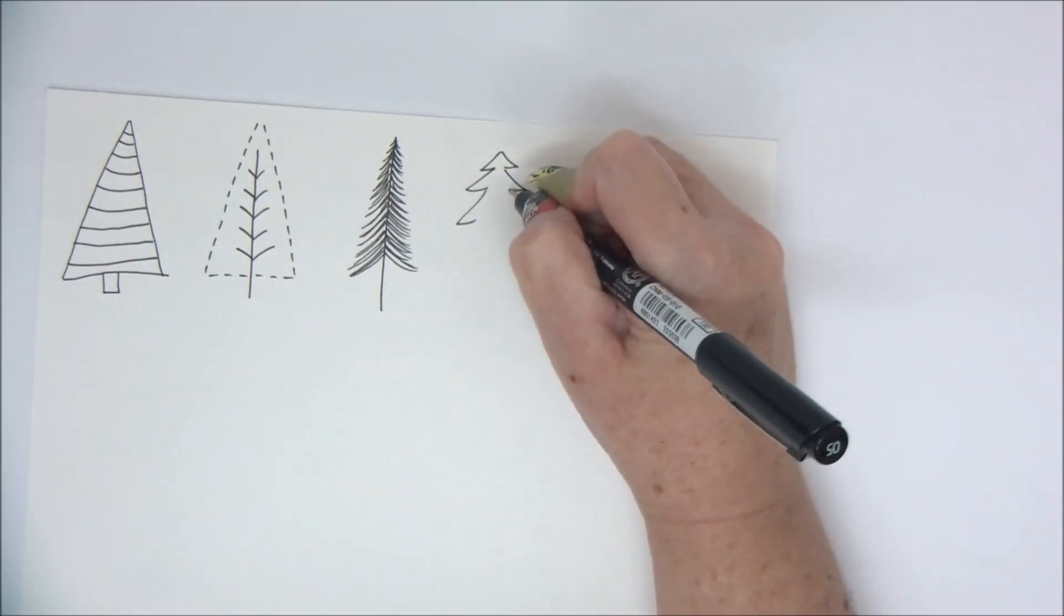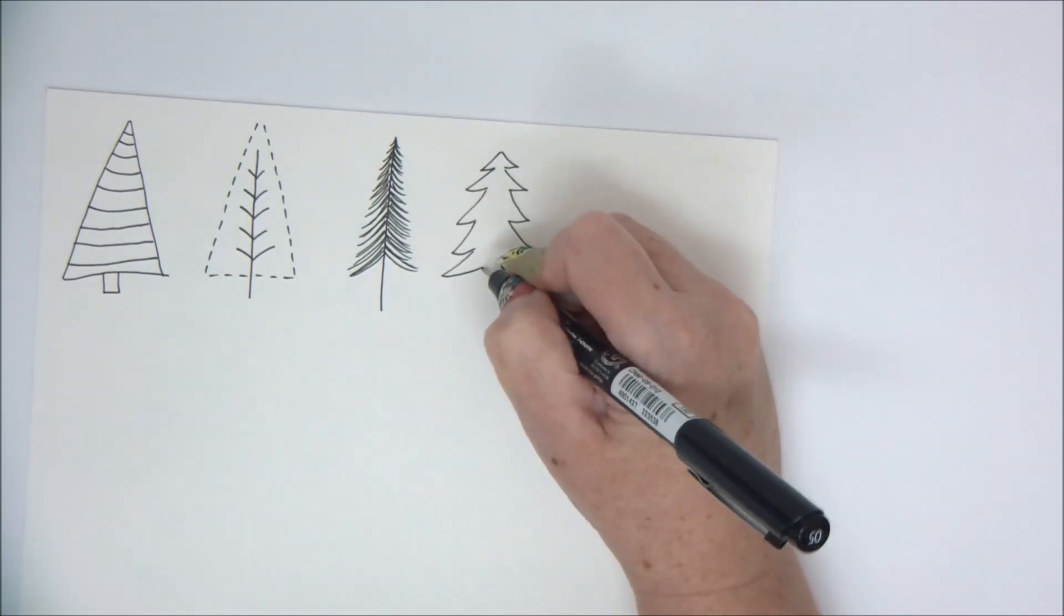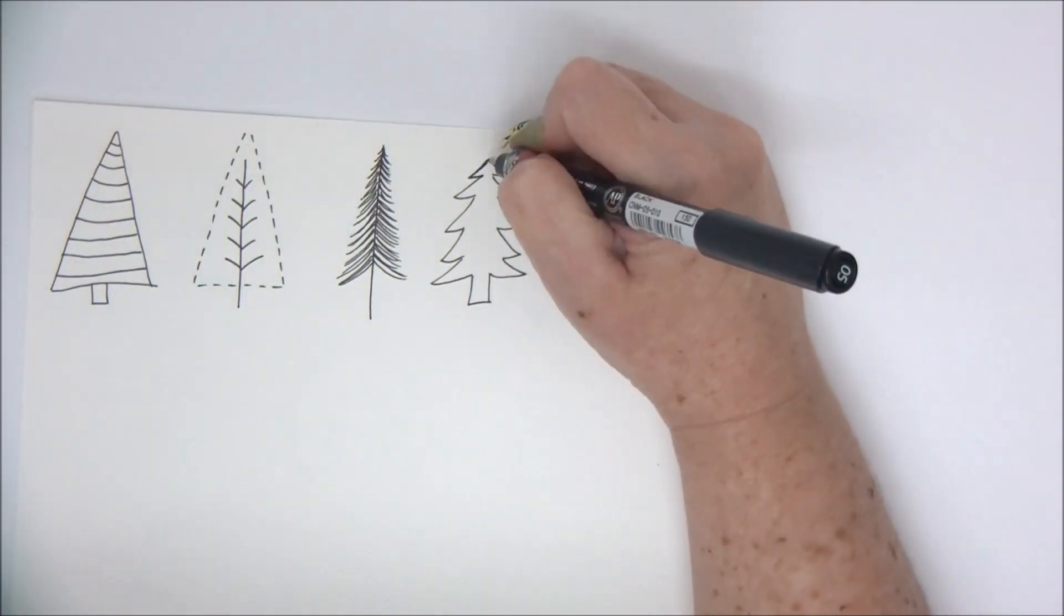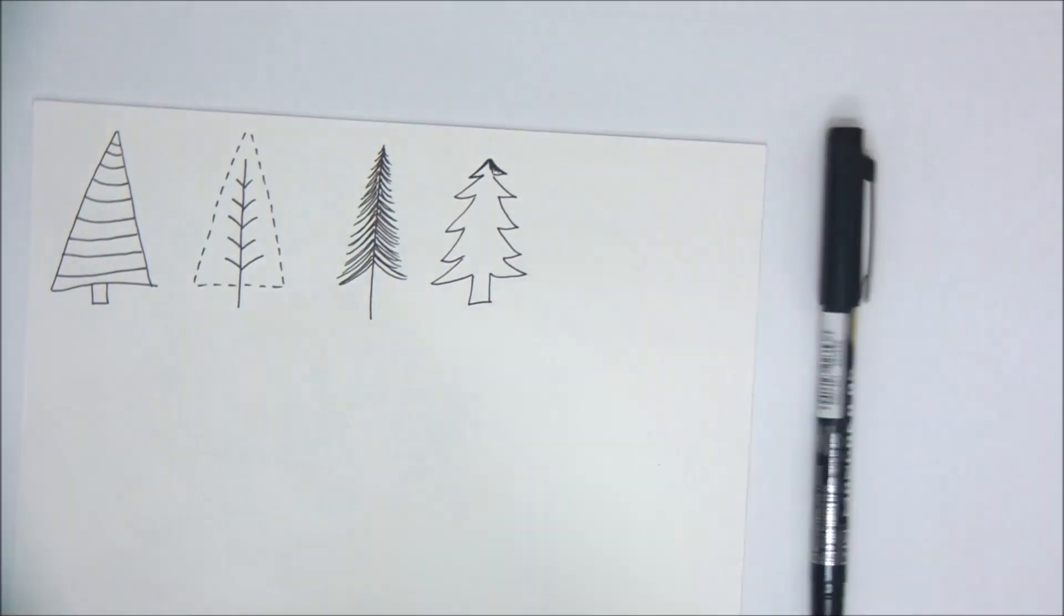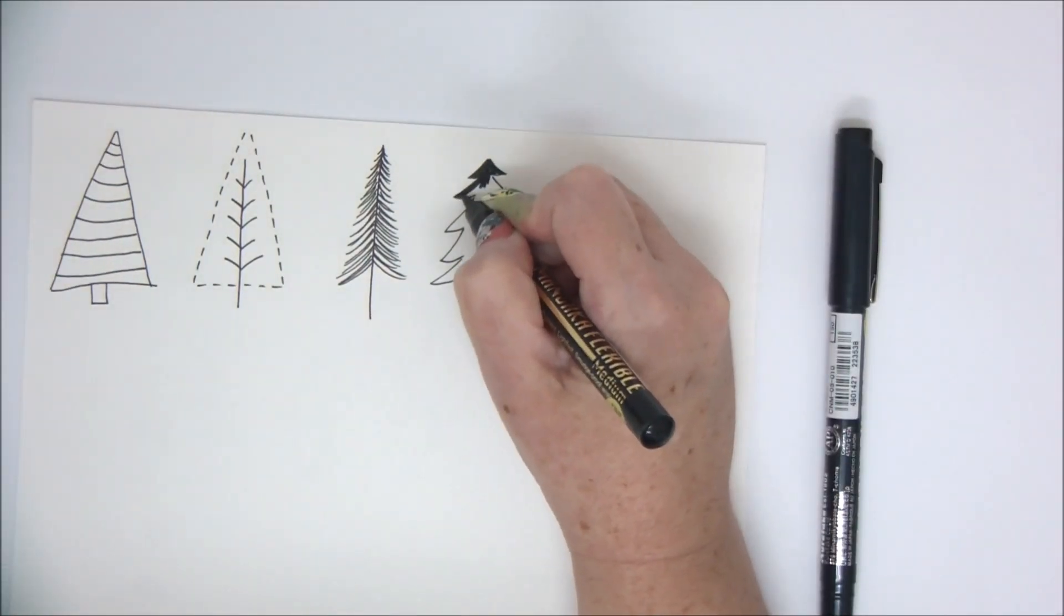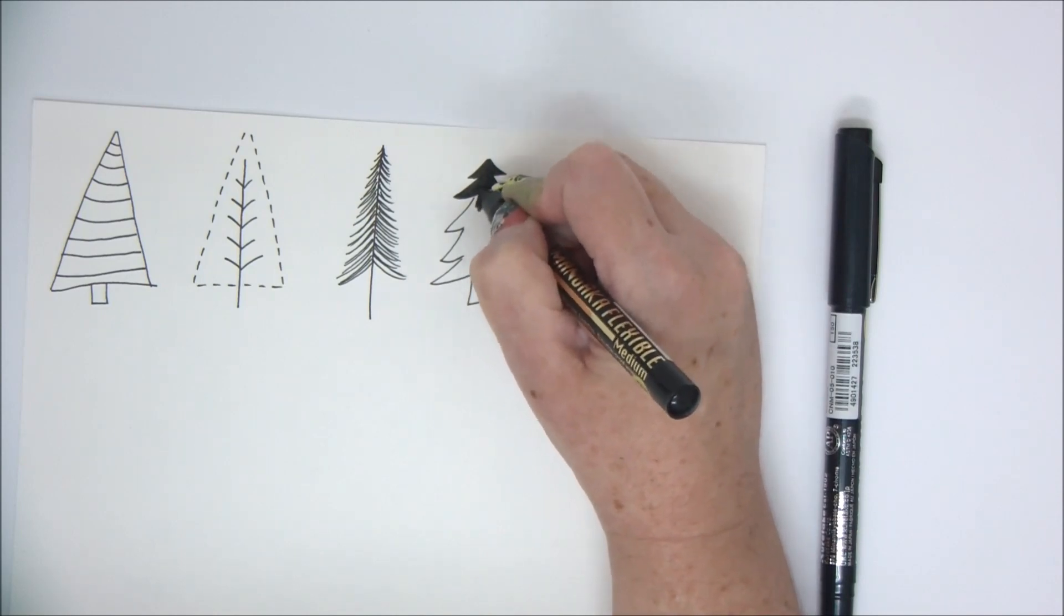Now for a more traditional shape by simply adding lines on both sides of the center with a trunk in the bottom. Let's color this one so it will be a bit more striking and visible.